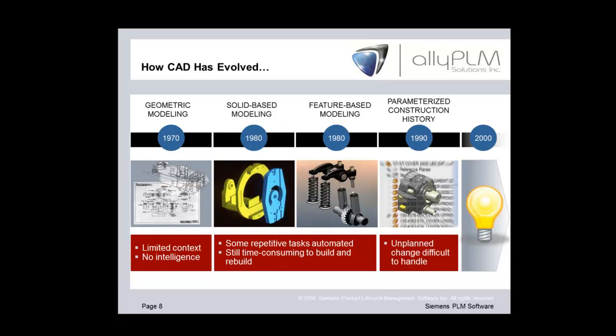In the mid-90s, those parametrics still applied, and companies like Solid Edge and SolidWorks put them on the Windows platform, making CAD easier to use and more affordable. But it was still based on the same parametric technology with a linear history tree. Up to 2000, that's the technology we've been using — and that's where synchronous technology comes into play.